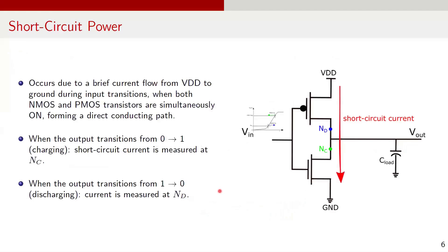Now let's look at short circuit power. Short circuit power dissipation occurs due to a brief current flow from VDD to ground during input transitions. This happens when both the NMOS and PMOS are on simultaneously, creating a direct current path between the supply and ground. Depending on the transition — whether the output is rising from 0 to 1 or falling from 1 to 0 — short circuit current is measured differently in simulation. When the output transitions from 0 to 1, the short circuit current is measured at point NC, and it is measured at point ND when the output transitions from 1 to 0. By isolating these points during charging and discharging, we ensure that the switching currents are excluded from the measurements.